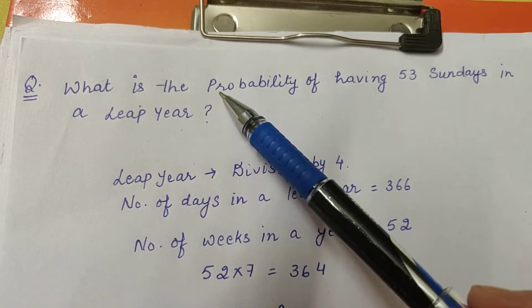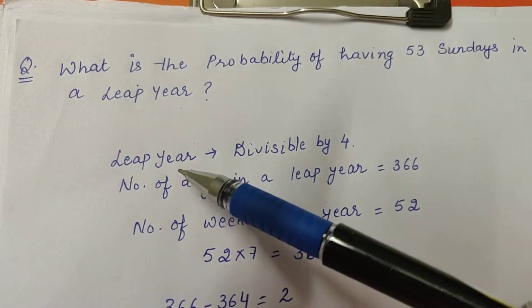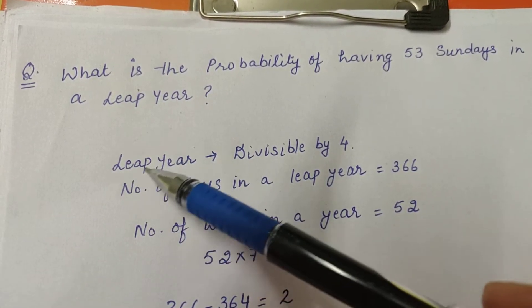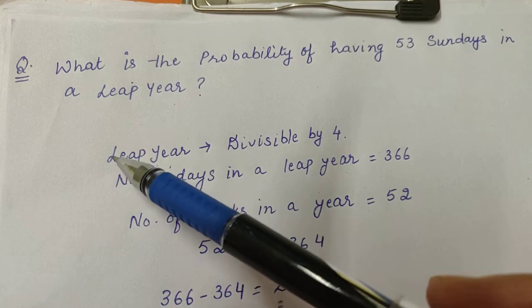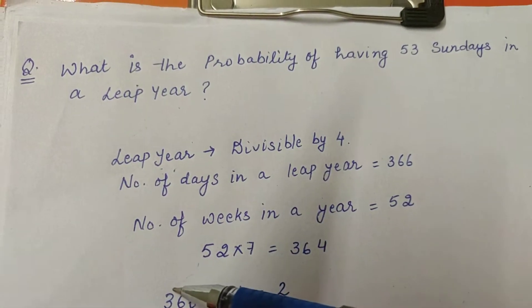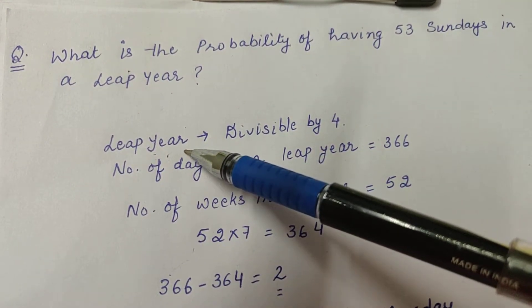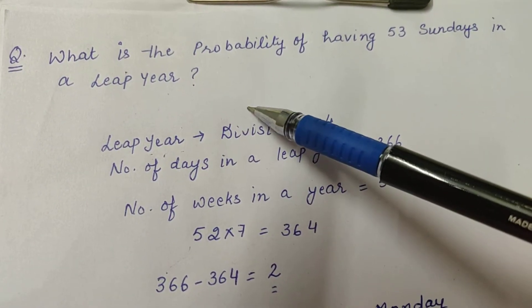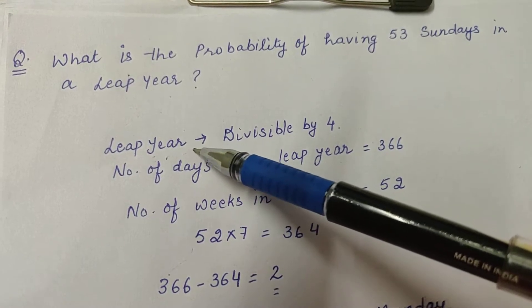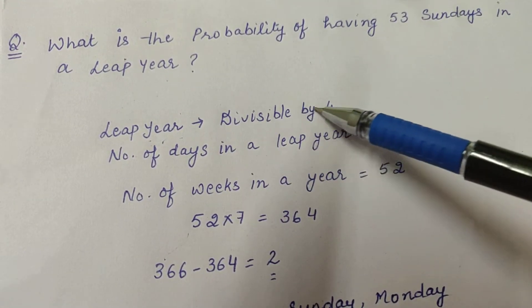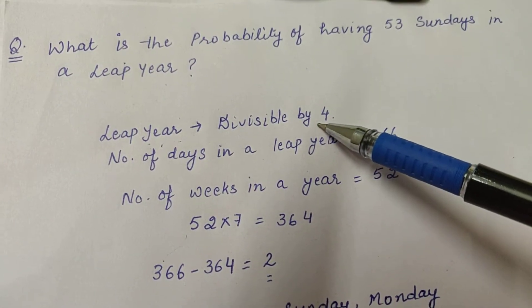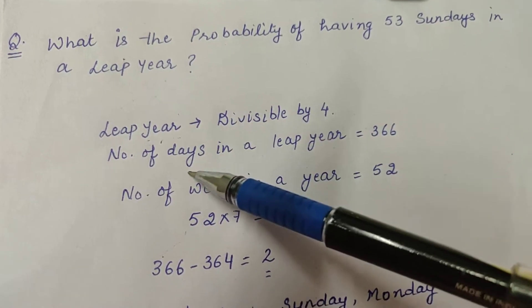To solve this question, first you need to understand what a leap year is. Generally when we ask students what a leap year is, the answer given is the year which comes every four years. But not every four years is necessarily a leap year. The correct definition is that a leap year is always divisible by four.